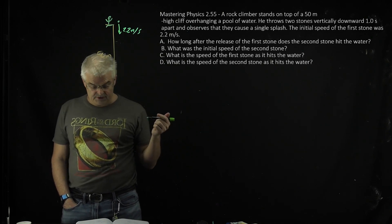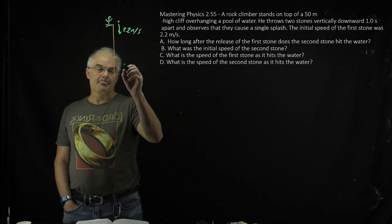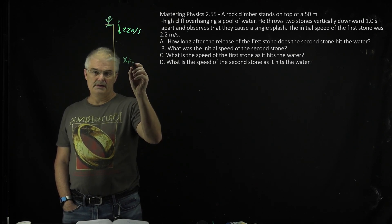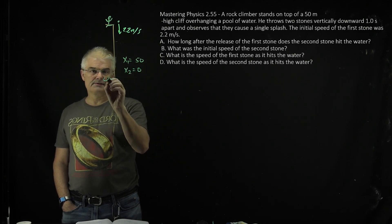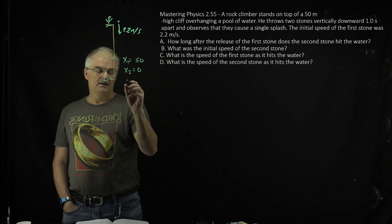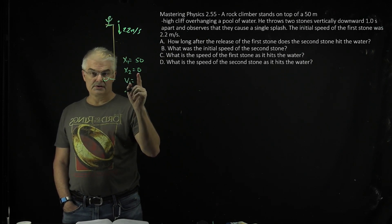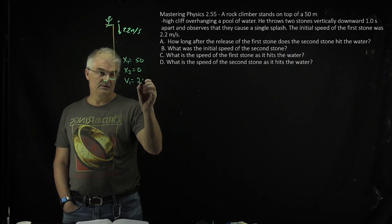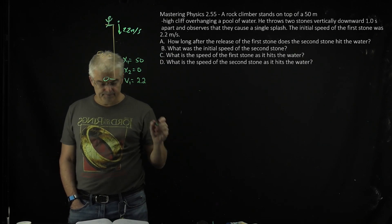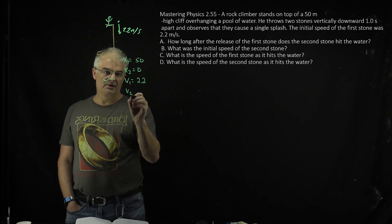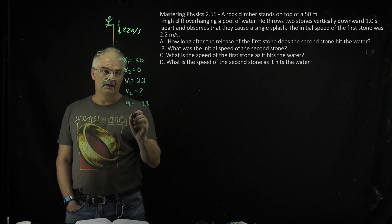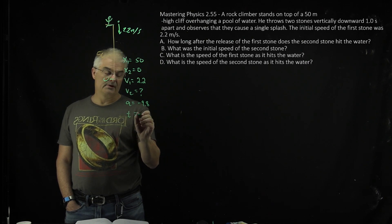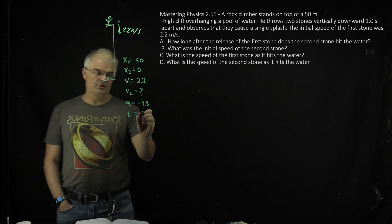So let's just identify what we know. We know that x1 equals 50, x2 equals 0. We're going to define this as 0 and this is 50, and then v1 equals 2.2. Of course, v2, we don't know that, and acceleration, we know that. That's negative 9.8, and time, we do not know. So we don't know two variables.